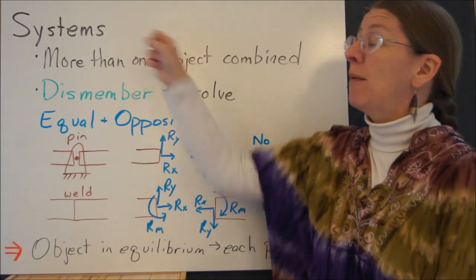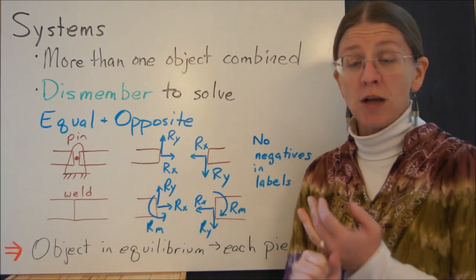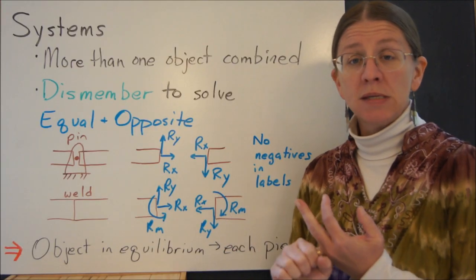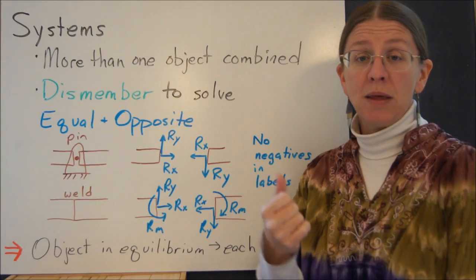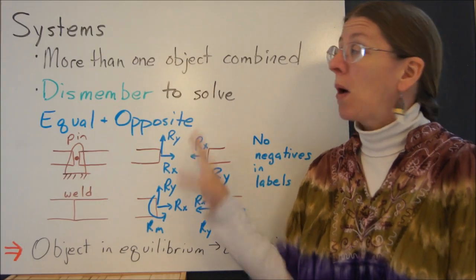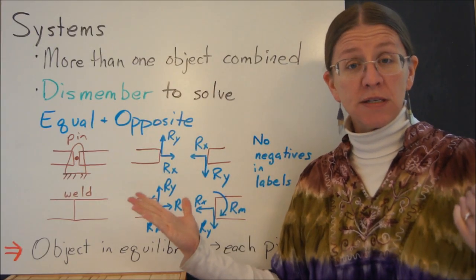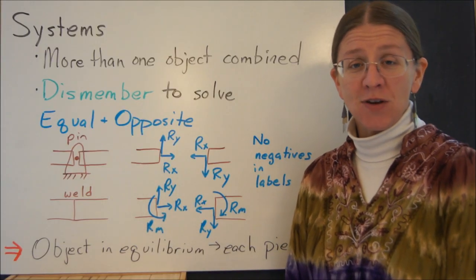So that's our main principle. We will apply this to a couple different kinds of systems. We're going to look at trusses, and then we're going to look at frames, and then we'll look at machines. And when we do trusses, we're going to do method of joints and the method of sections. So that's sort of where we're at in the whole course of the semester, and we will head next to trusses.